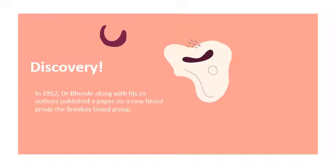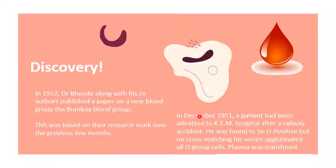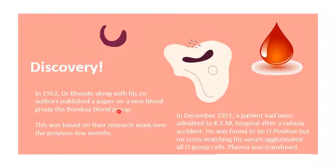In December 1951, one patient got into an accident at a railway station and was admitted to a hospital. During blood group testing, they found the patient was O positive and transfused O group blood, but after transfusion the serum got agglutinated. From this, Dr. Bhende along with his co-author did research on this particular blood group and published a new paper in 1952. This is how the Bombay blood group was accidentally discovered.